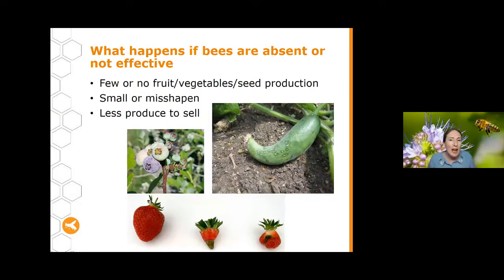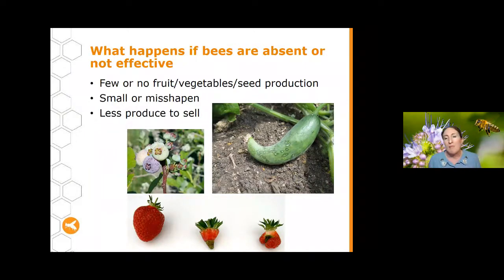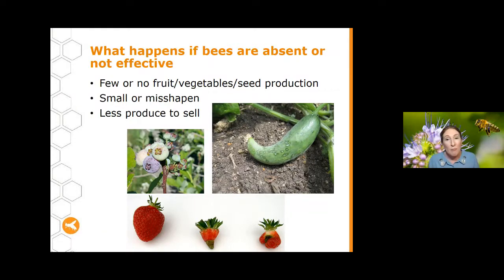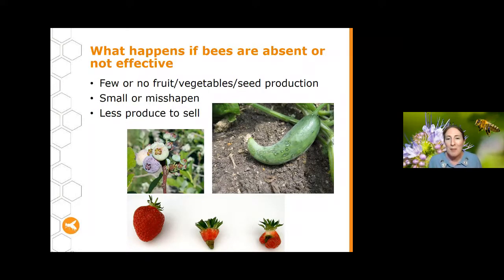So what happens if you don't have bees or they're not being very effective at doing that job? For a start, you're going to get either no fruit, vegetables, or seed production. If you're a farmer, that means no crop to sell. If you're a backyard gardener, your garden's not going so well. And on a global scale, if bees aren't being good pollinators, it could mean really quite important things like food shortages. Poor pollination not only means less or no fruit — it can also mean that fruit is small and misshapen, as you can see in these examples here.